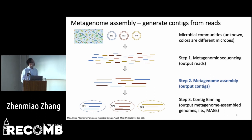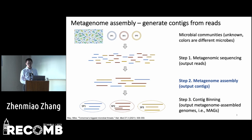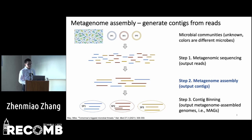Because a genome in the original microbiome community can be assembled into a large number of contigs, the final step is to bin the contigs that originate from the same microbe together into a bin called the MAG.